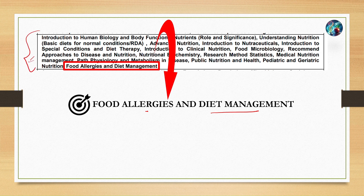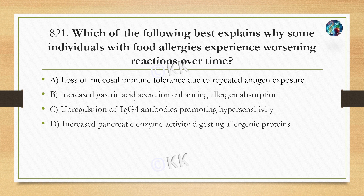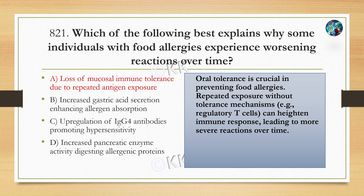Which of the following best explains why some individuals with food allergies experience worsening reactions over time? Option A: loss of mucosal immune tolerance due to repeated antigen exposure. Option B: increased gastric acid secretion enhancing allergen absorption. Option C: upregulation of immunoglobulin G4 antibodies promoting hypersensitivity. Option D: increased pancreatic enzyme activity digesting allergenic proteins.